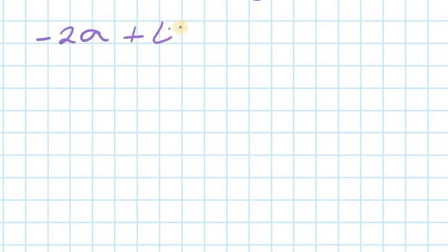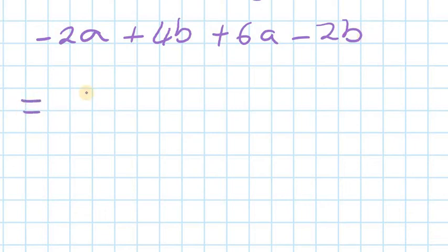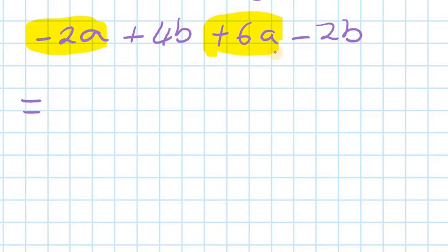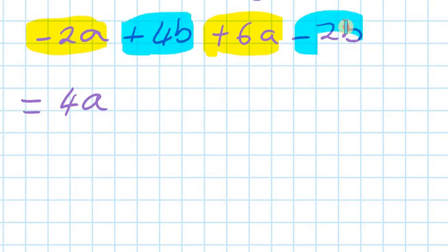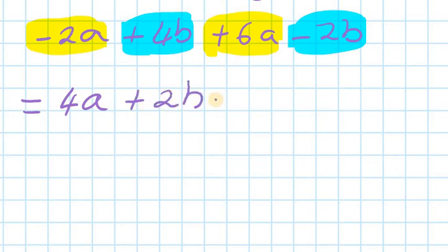Let's say minus 2a plus 4b plus 6a minus 2b. Look for like terms again. So minus 2a and 6a are like terms — minus 2 plus 6, which is the same as 6 minus 2, which is 4 — so 4a. And then plus 4b and minus 2b are like terms — so 4 minus 2 is 2 — so 2b. That's the answer.